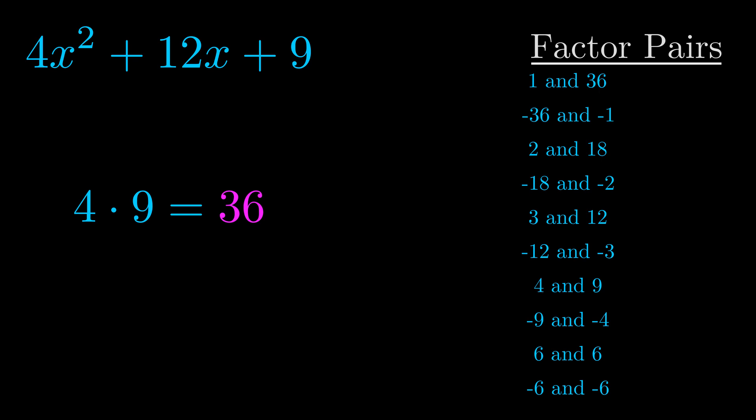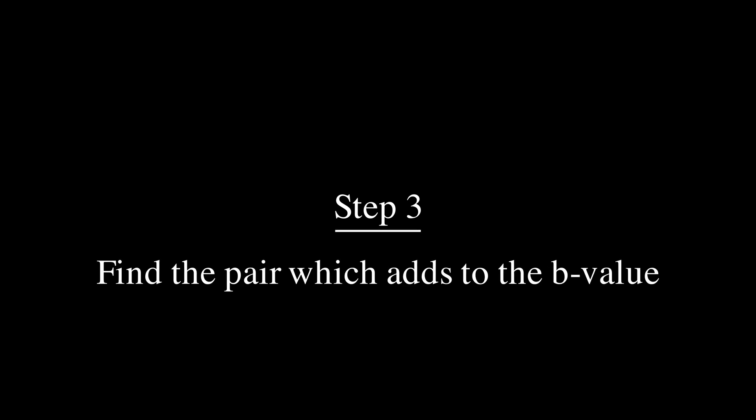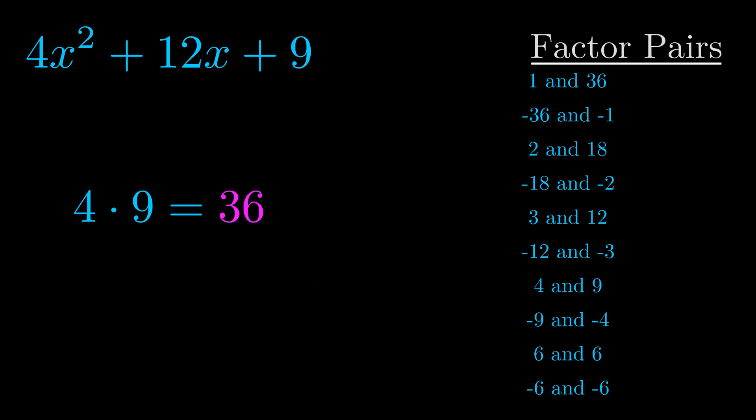Now once you have these factor pairs the goal is to find which of these pairs adds to the b value. The b value is the coefficient on the x term. That's the middle term, the one that we haven't done anything with yet. And really this is the only factor pair that we need.